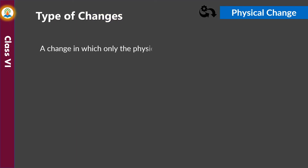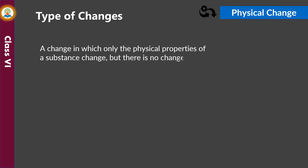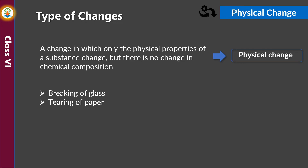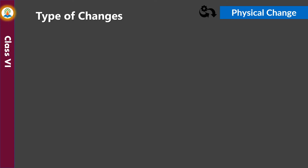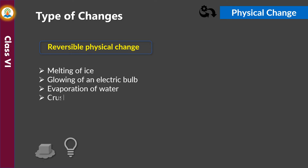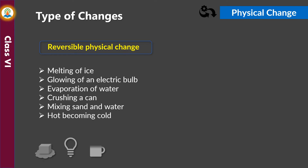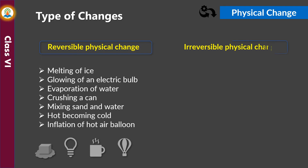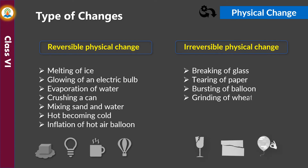A change in which only the physical properties of a substance change, but there is no change in chemical composition, is called a physical change. Examples of physical changes are breaking of glass, tearing of paper, melting of ice, and glowing of an electric bulb. Some physical changes are reversible — for example, melting of ice, glowing of an electric bulb, evaporation of water, crushing a can, mixing sand and water, hot becoming cold, and inflation of a hot air balloon. Some physical changes can be irreversible — for example, breaking of glass, tearing of paper, bursting of a balloon, and grinding of wheat into flour.